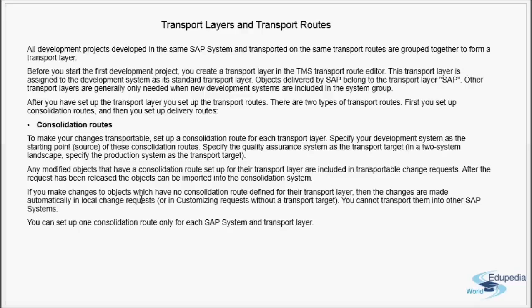Generally, a change request's consolidation route is part of the details of the change request. Once it is released, it is ready to be imported into the target system — the QA or consolidation system. If you make changes to objects that have no consolidation route defined for their transport layer, those changes are automatically classified as local change requests and cannot be transported into other SAP systems. In your change request, if you forget to include the transport route for that transport layer, then those change requests are known as local change requests.